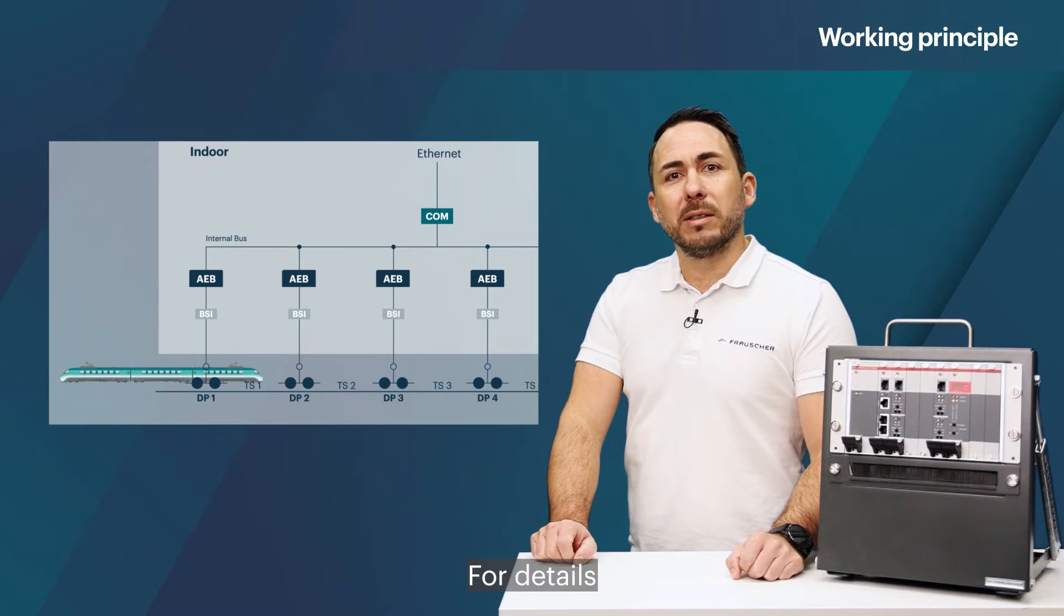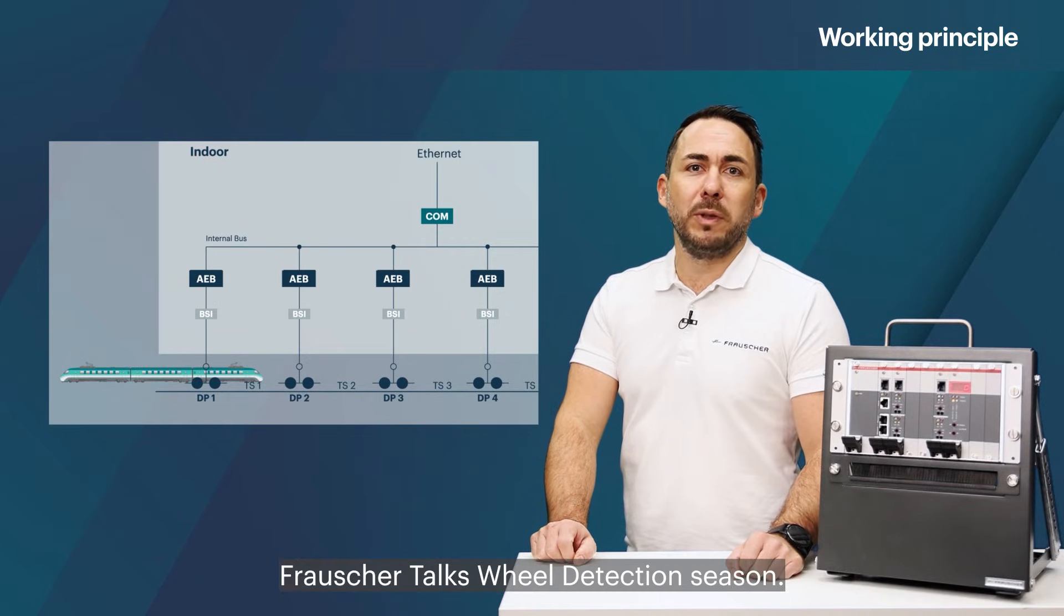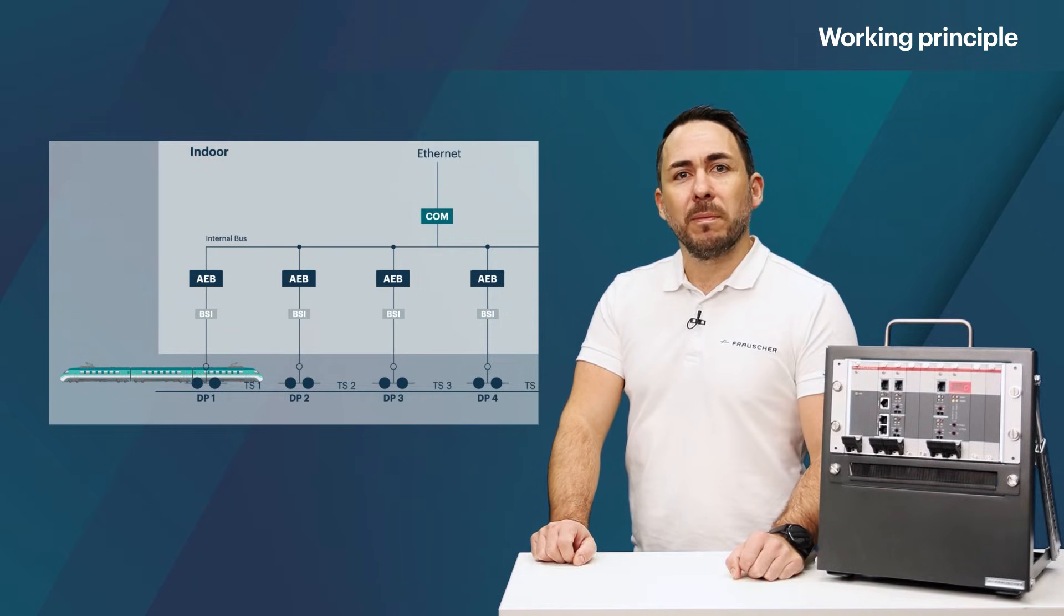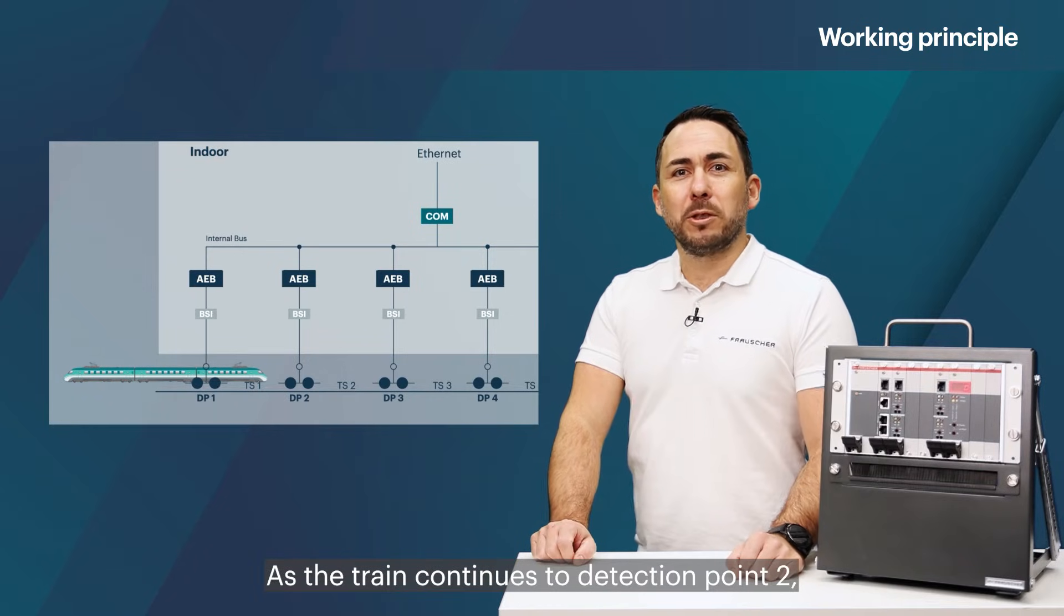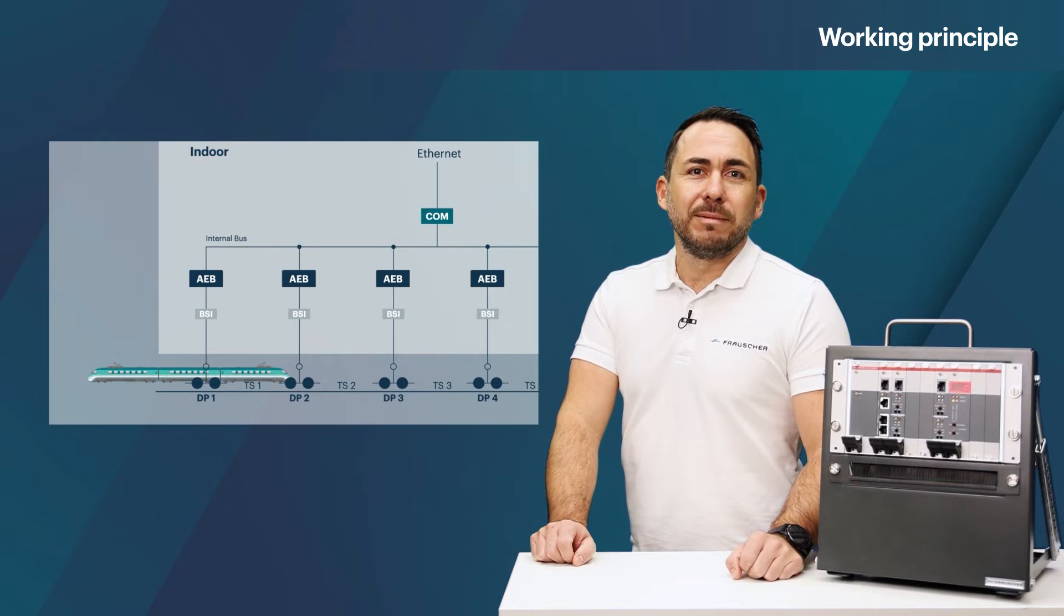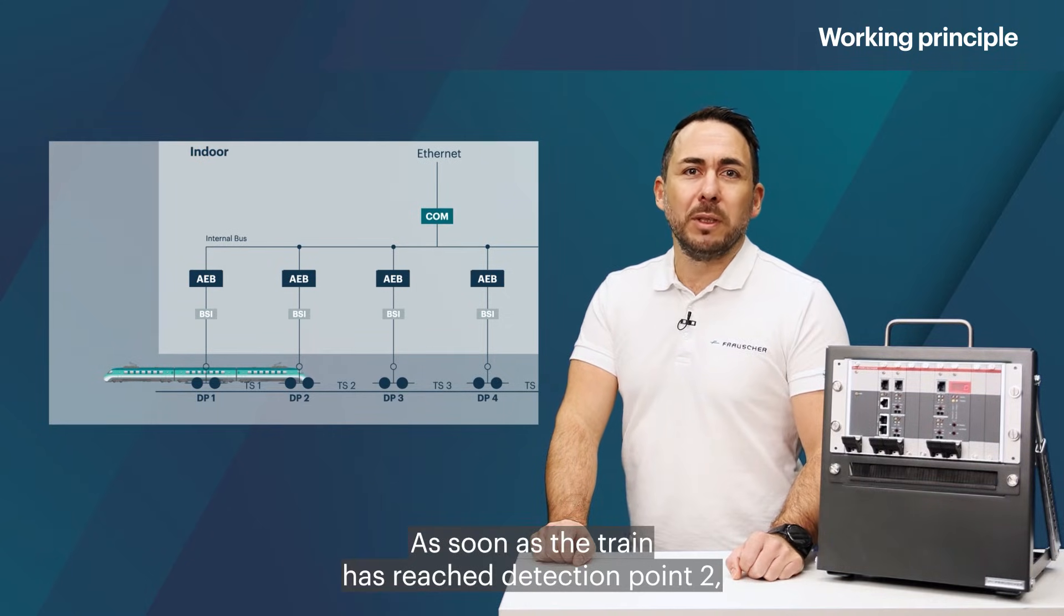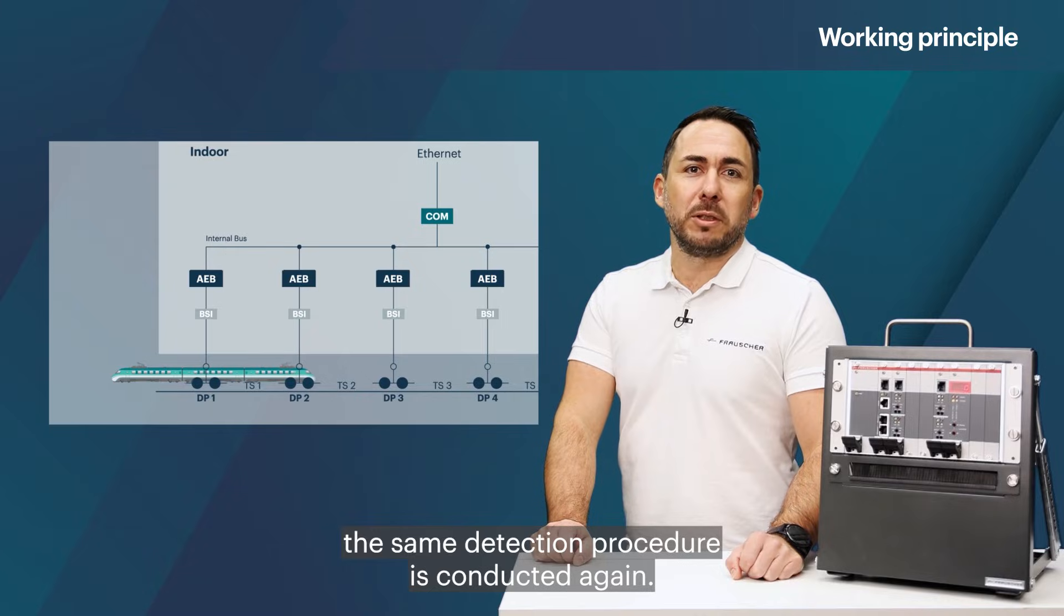For details on the wheel detection and digitization functionality, please tune into the Frauscher Torx wheel detection season. As the train continues to detection point 2, all wheels passing DP1 will be detected. As soon as the train has reached detection point 2, the same detection procedure is conducted again.